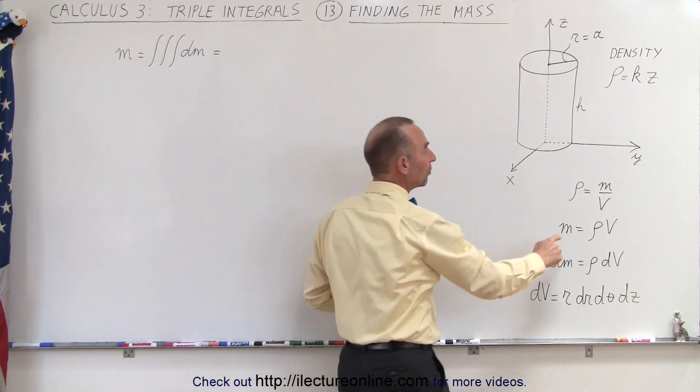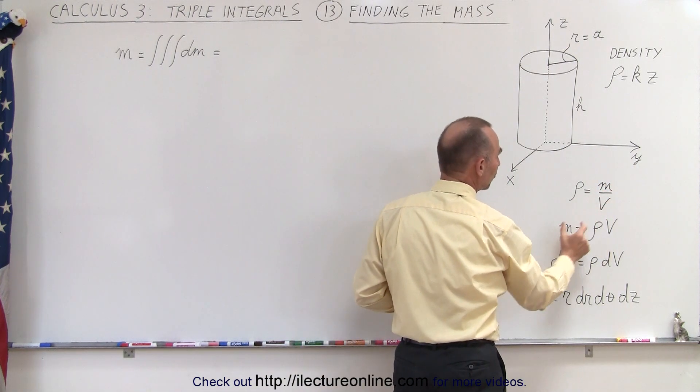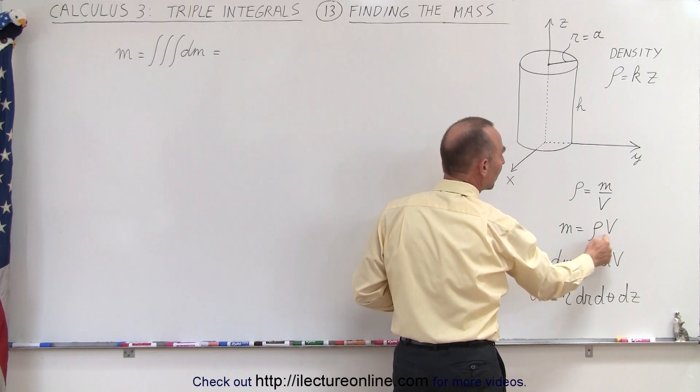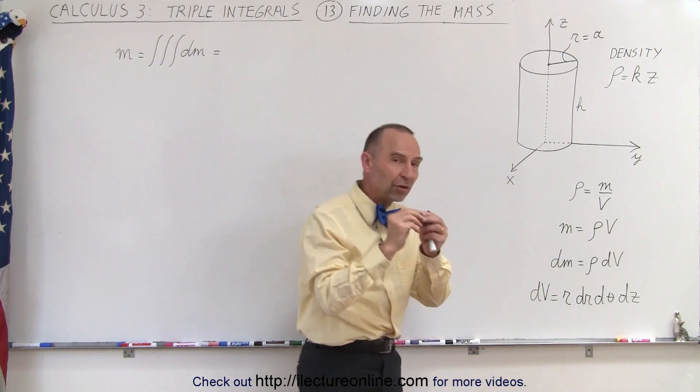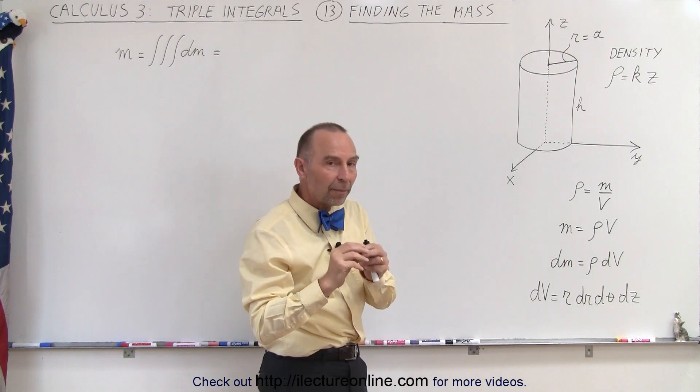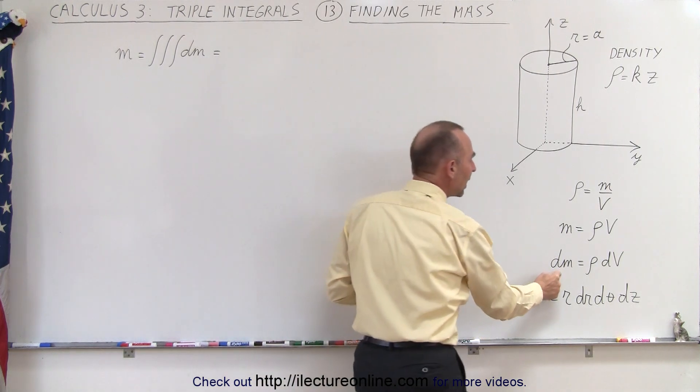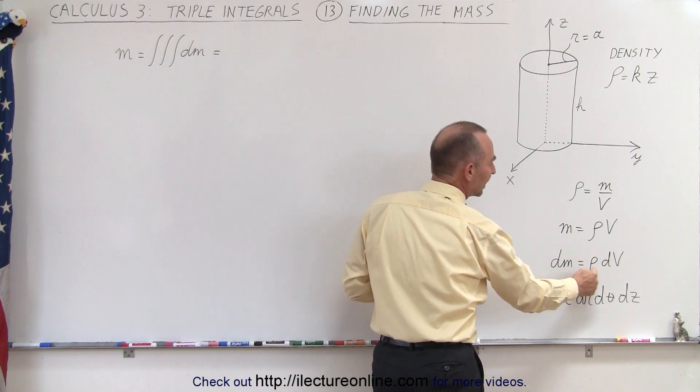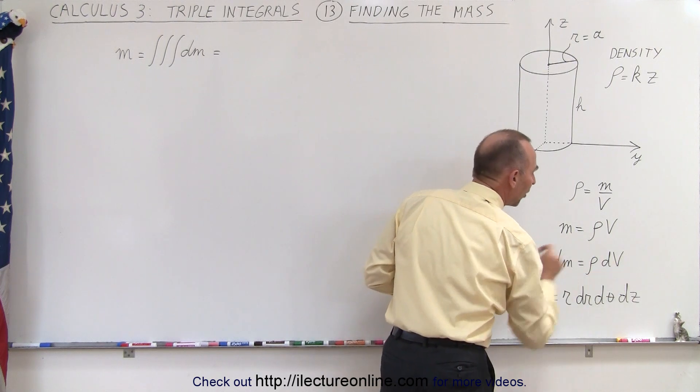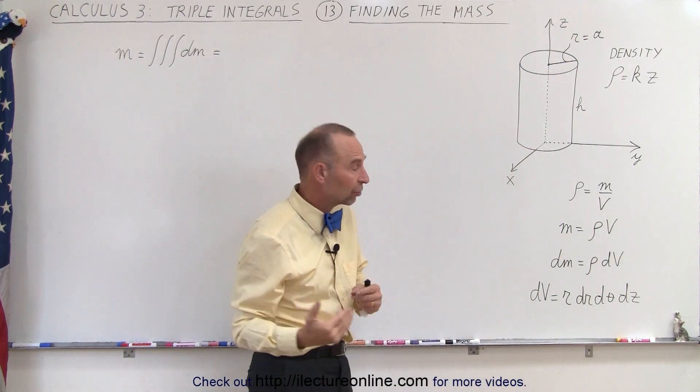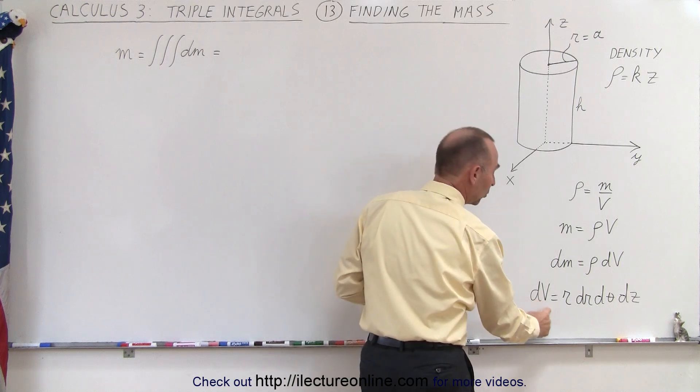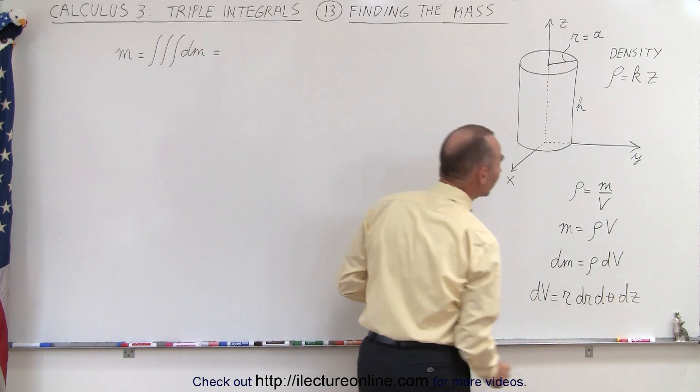The density is defined as the mass divided by the volume, which means the mass equals the density times the volume. If we take a small volume element, the small amount of mass dm is the product of the density times that small volume element. In cylindrical coordinates, the volume element is r dr dθ dz.